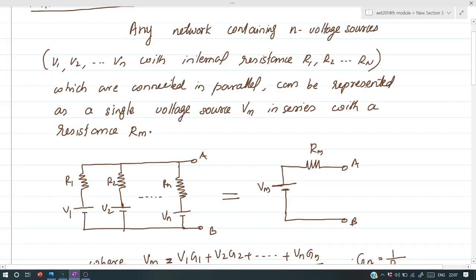Millman's theorem states that when a number of voltage sources V1, V2, V3, ... Vn are in parallel having internal resistance R1, R2, ... Rn respectively, the arrangement can be replaced by a single equivalent voltage source Vm in series with an equivalent series resistance Rm.